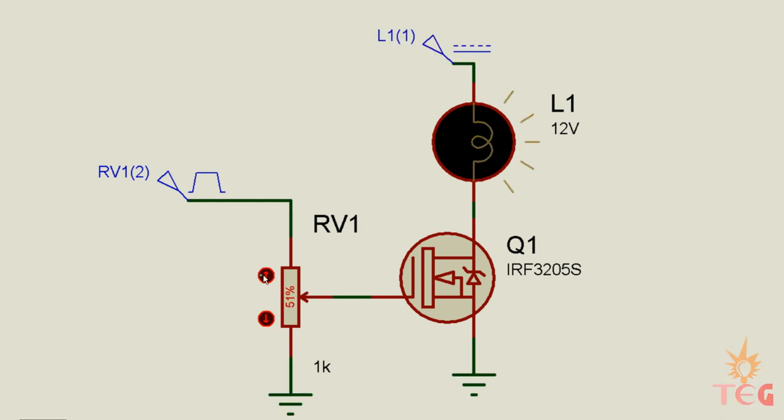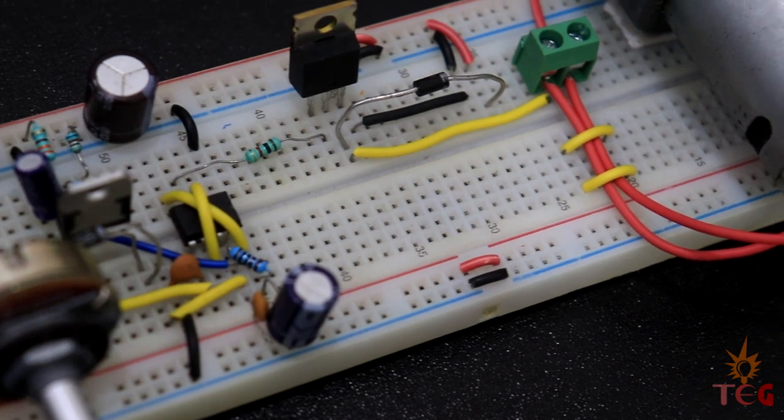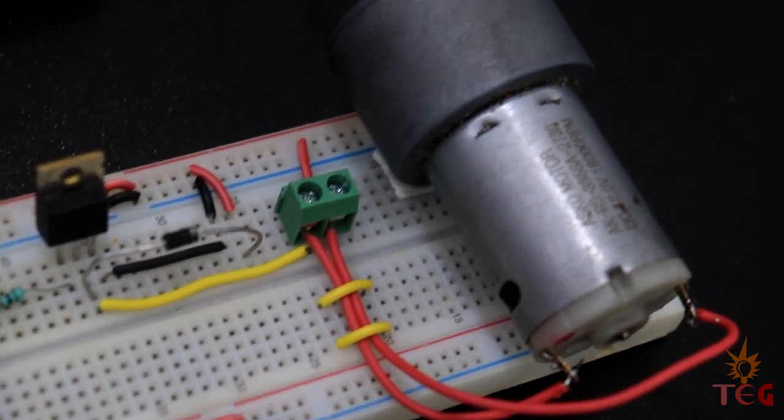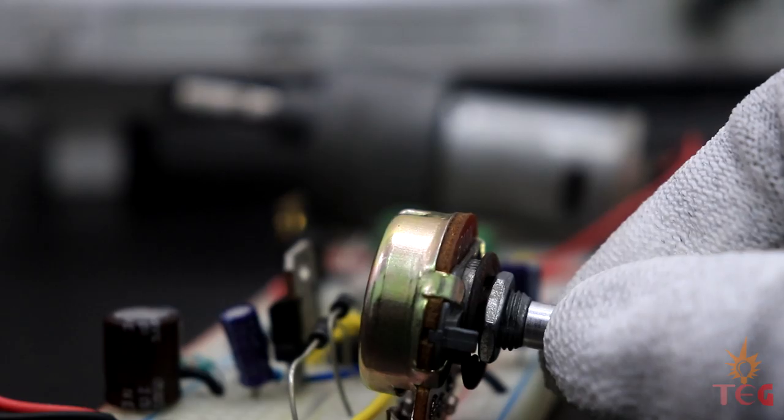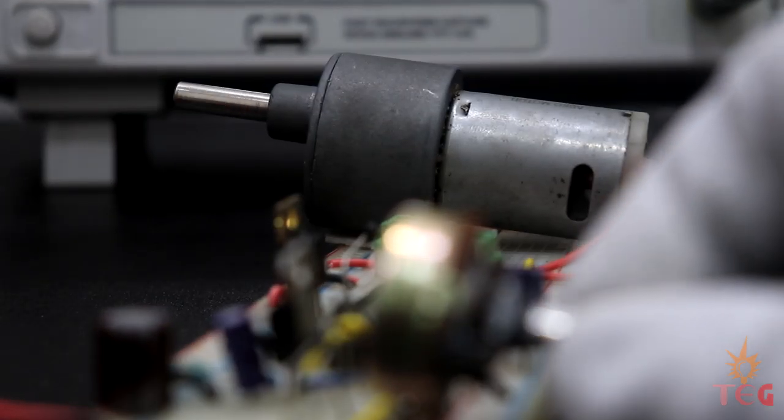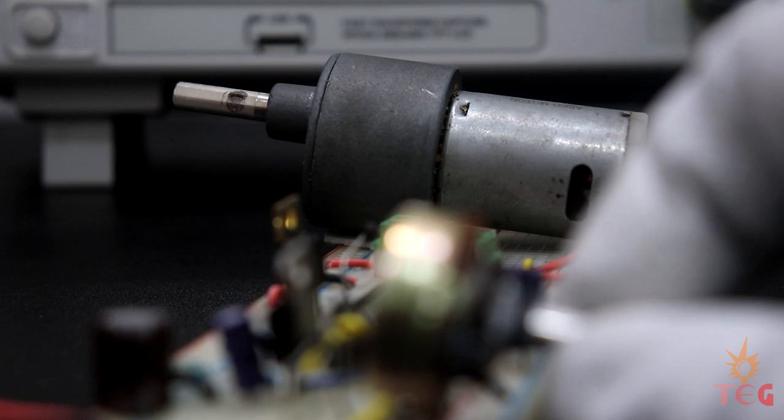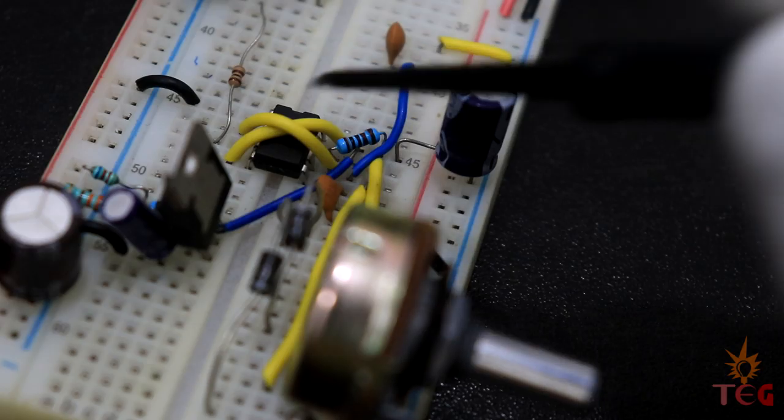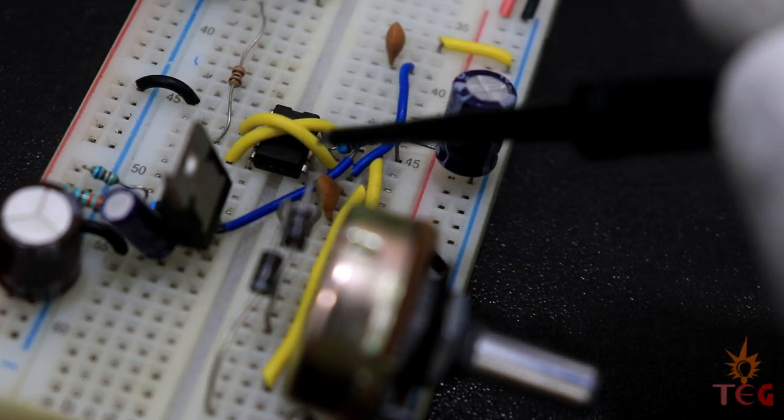So this way, if a DC motor is connected between drain and source of the MOSFET, voltage across it and the speed can be controlled by controlling the gate voltage. And to do so, we need a variable voltage at the gate. Now here comes the PWM generator to the rescue.